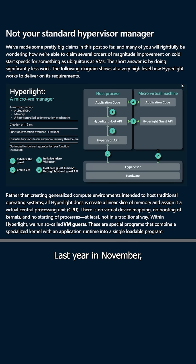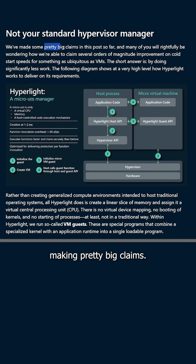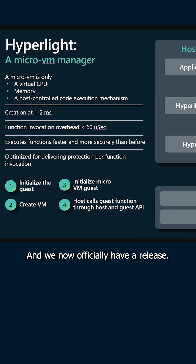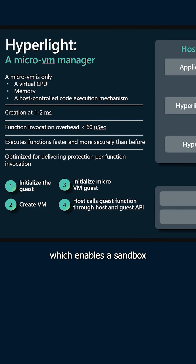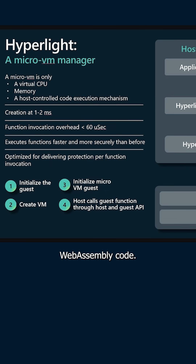Last year in November, this new micro virtual machine manager was announced, making pretty big claims, and we now officially have a release. For those of you unaware, Hyperlite is an open source project that securely runs web assembly modules and other sorts of functions, which enables a sandbox execution of third party or untrusted web assembly code. It's got minimal latency and support for Windows, Linux, and macOS.